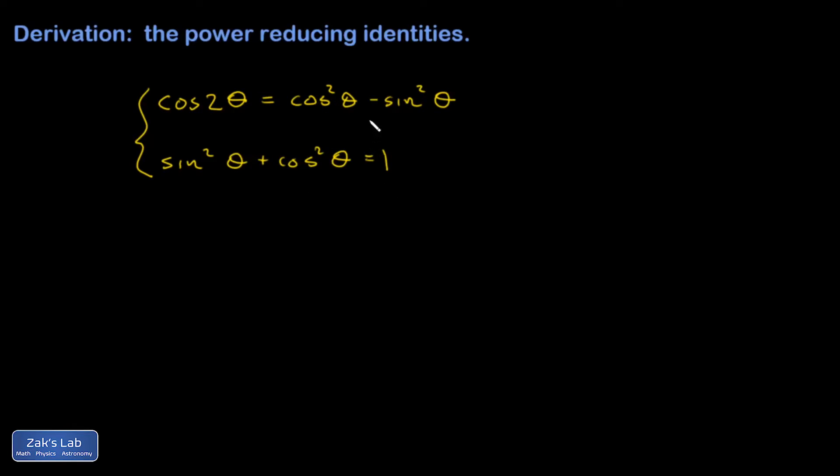I'll get rid of the sine function first. From the bottom formula, sine squared of an angle is one minus cosine squared. Then I'm going to substitute that into the top formula.